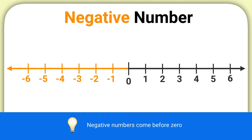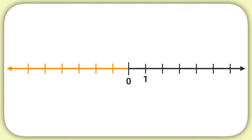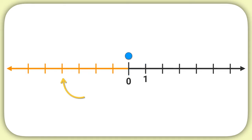So let's say we had this number line, and we wanted to figure out what this dash represented. Well, let's think about it. We'll start at 0, and we can see when I move one dash, I'm moving a distance of 1. So if I move one dash the other way, now I would be at negative 1.